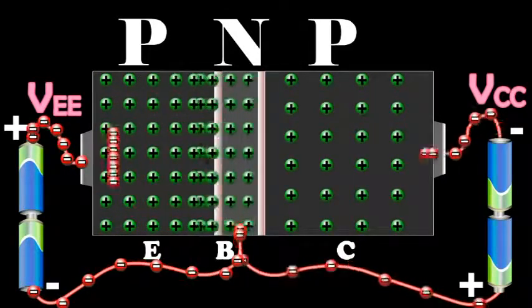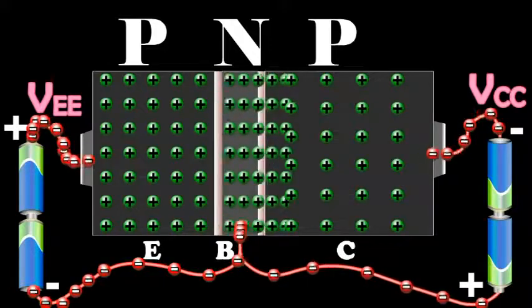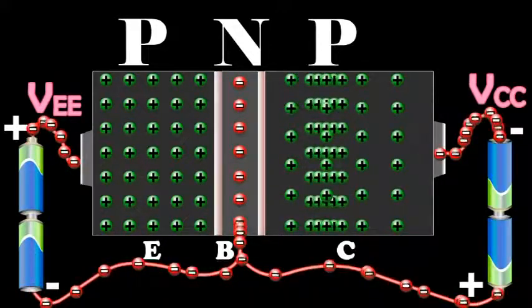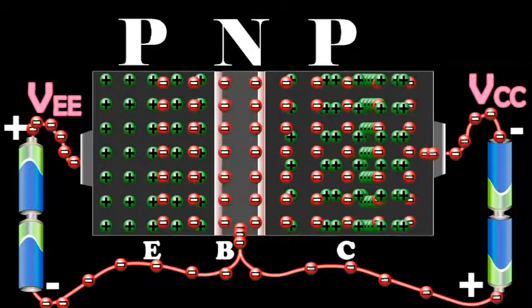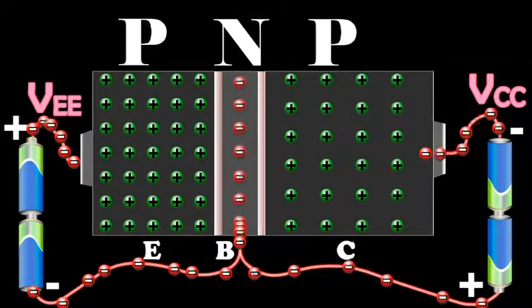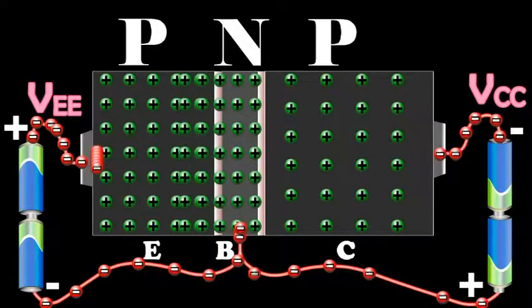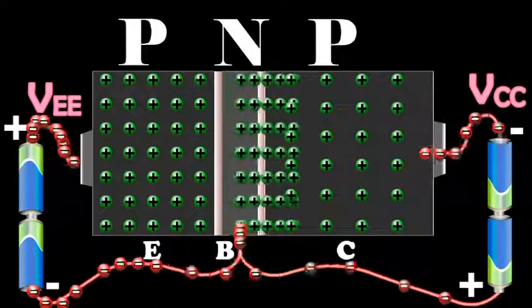In the emitter, IE is due to the flow of holes, but in the external circuit the current is due to the flow of electrons from the emitter to the positive terminal of the battery VEE.